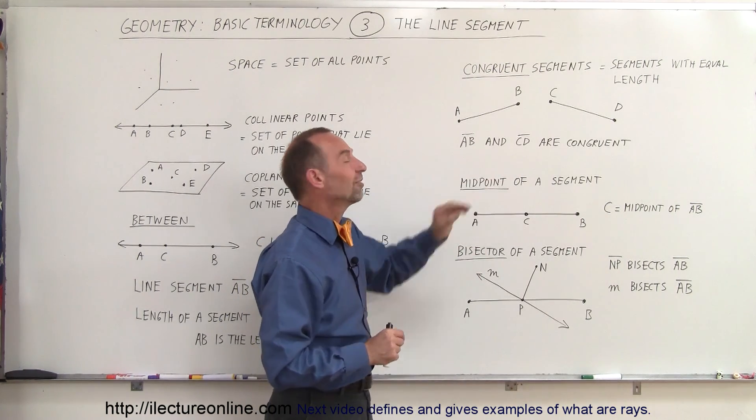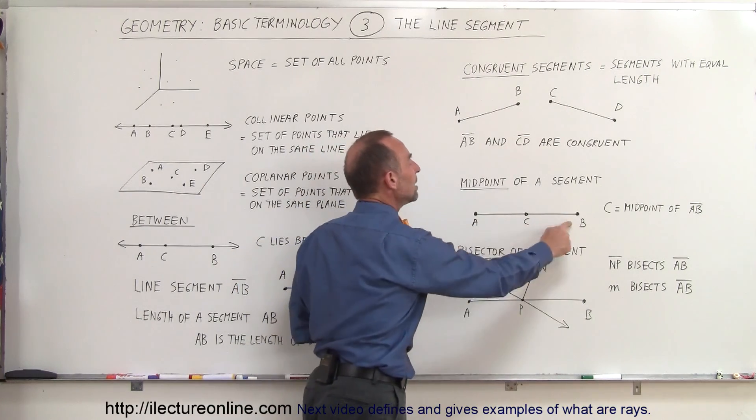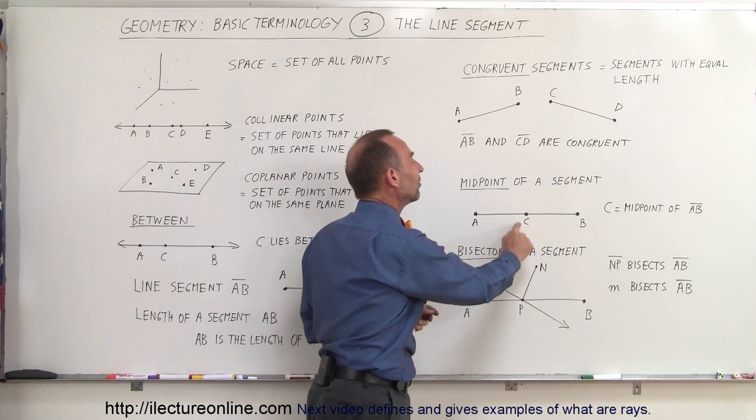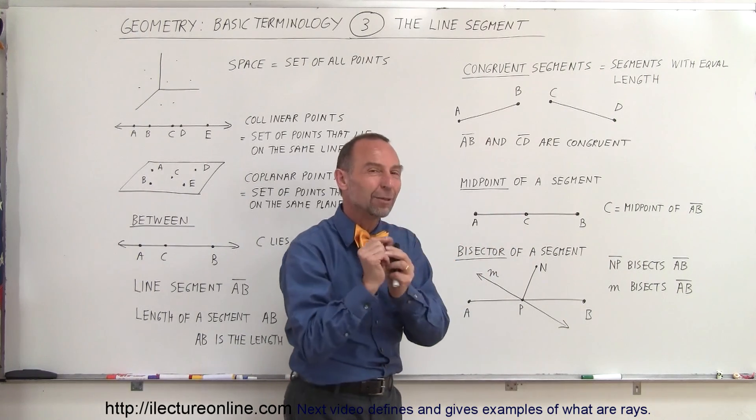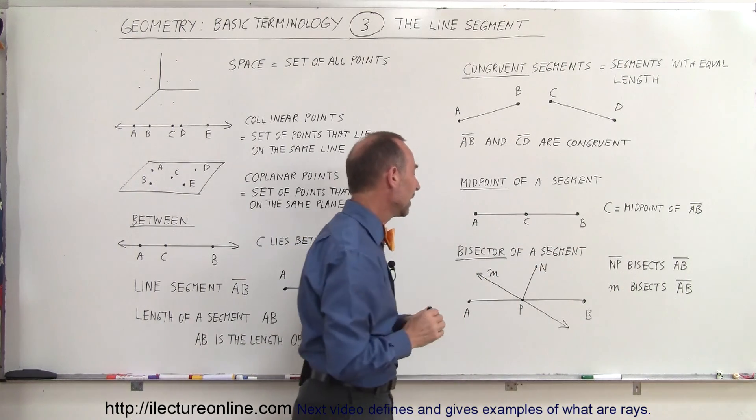The midpoint of the segment is the point exactly in the middle between the two endpoints. So if A and B represent the two endpoints of the line segment AB, then C is the midpoint of AB if it's right in the middle—same distance from C to A as it is from C to B.